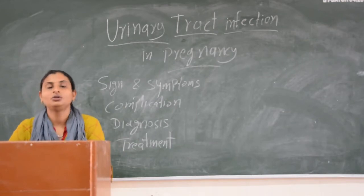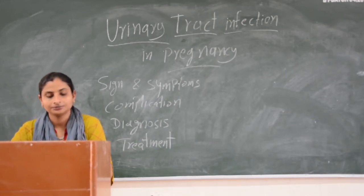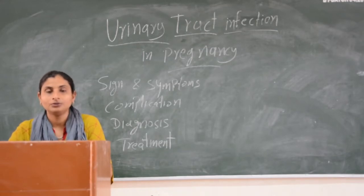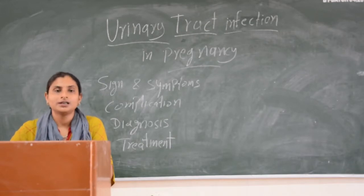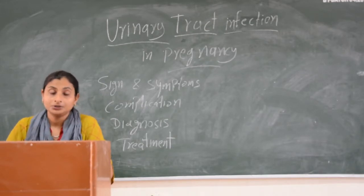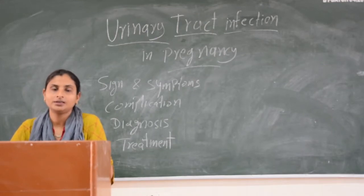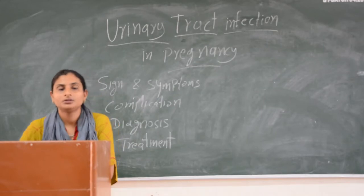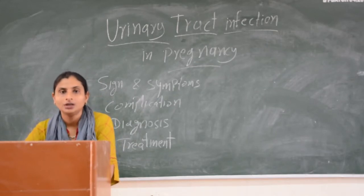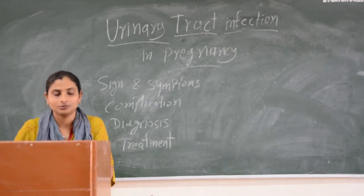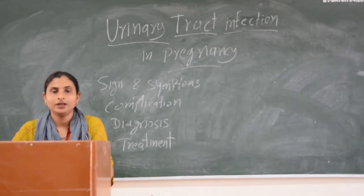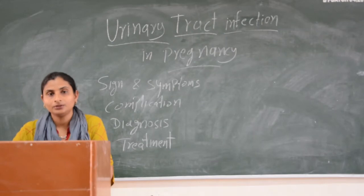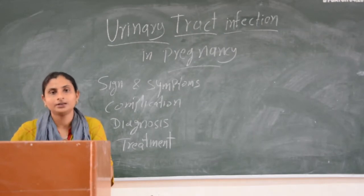What is cystitis? Cystitis is an infection of the lower urinary tract, characterized by burning micturition, frequency, and urgency of urination. Acute pyelonephritis is an upper urinary tract infection where the renal pelvis and renal parenchyma are involved.